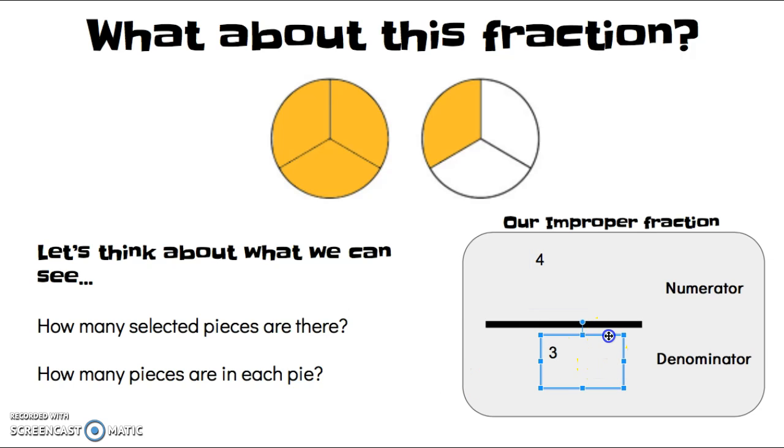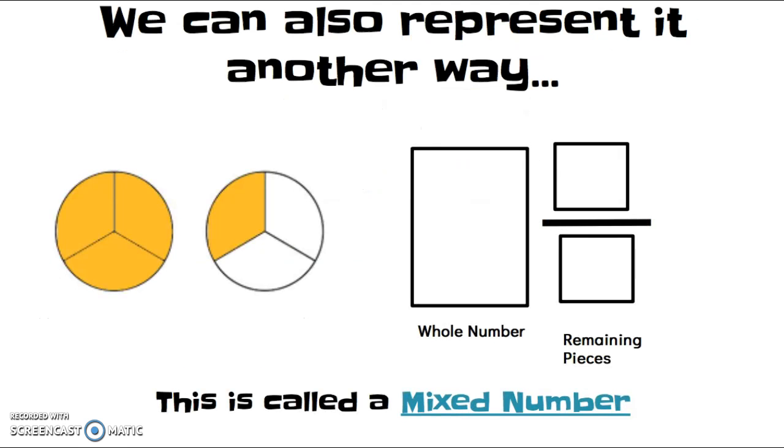This is what we call an improper fraction. It's improper because the numerator is 4, which is larger than our denominator, which is only 3. And so, when we see a fraction where there's more pieces colored than there are pie pieces, it's what we call an improper fraction.